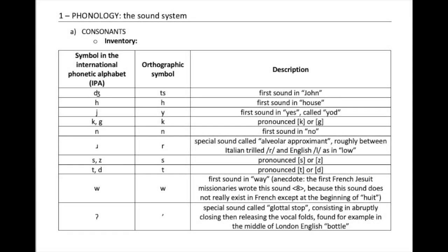Let us first look at the phonology of the Mohawk language — its sound system. There are ten consonants in Mohawk: J as in John, H as in house, Y as in yes (a special sound called yod), K which can also be pronounced G, N as in no, R which is a special sound called alveolar approximant — roughly between Italian trilled R and English L as in low.